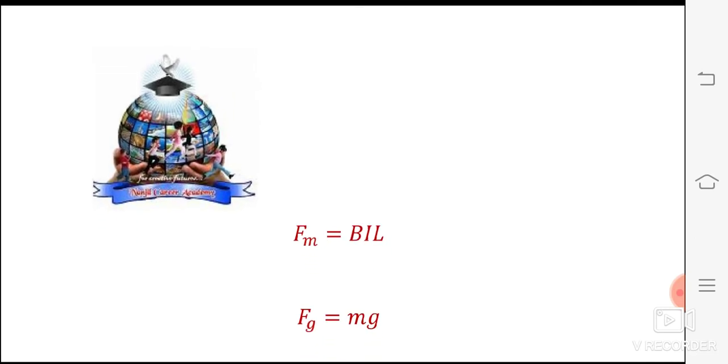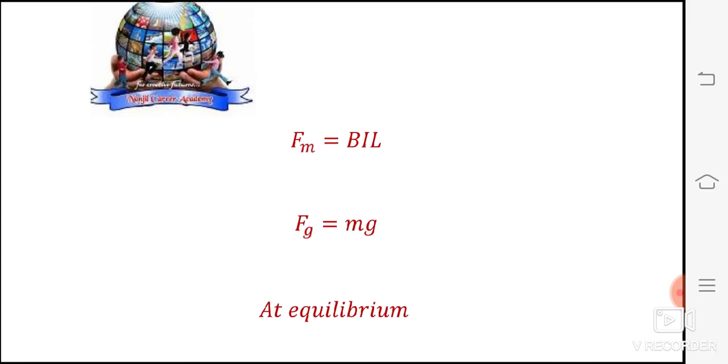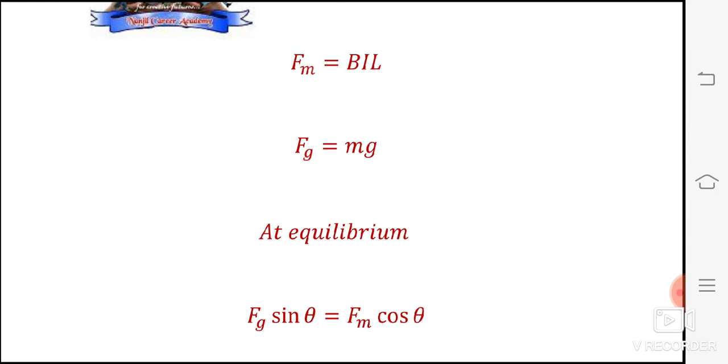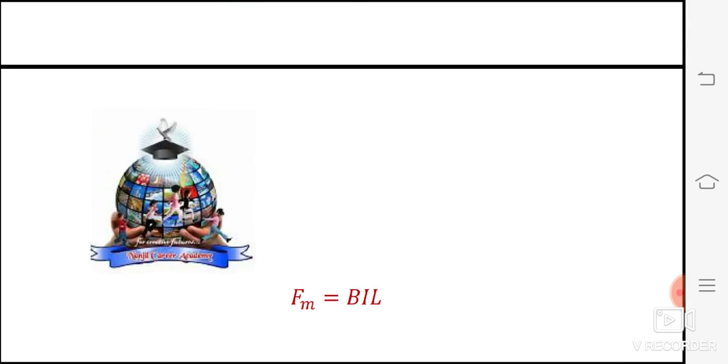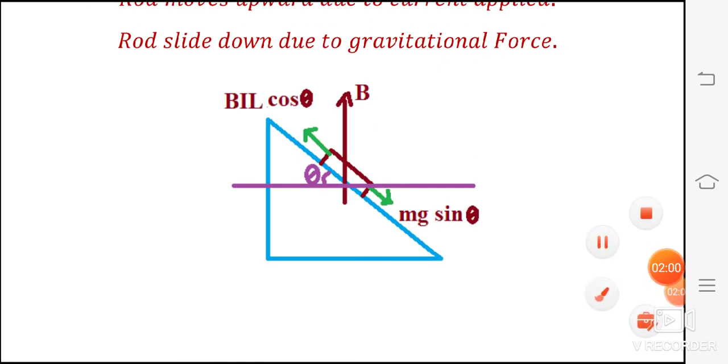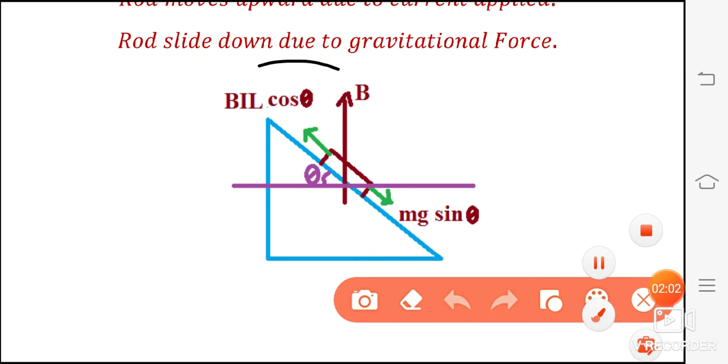Force due to gravitation - gravitational force fg is equal to mg. At equilibrium, that is in the problem for stationary position of rod, upward force is equal to downward force. So bil cos theta is equal to mg sin theta.